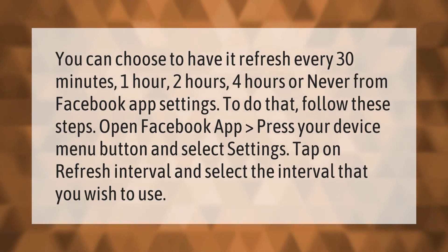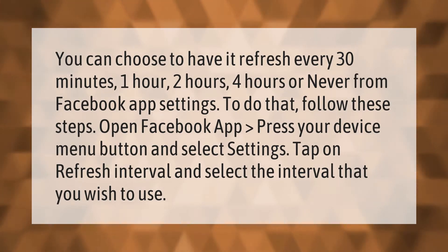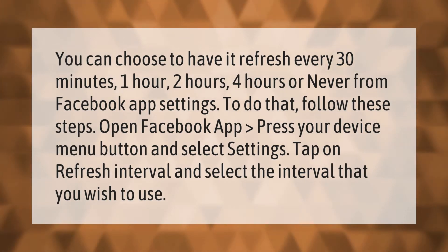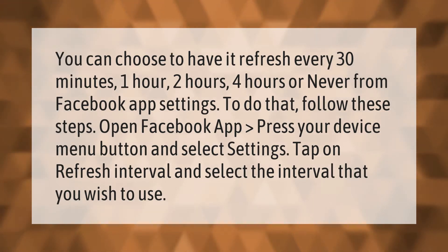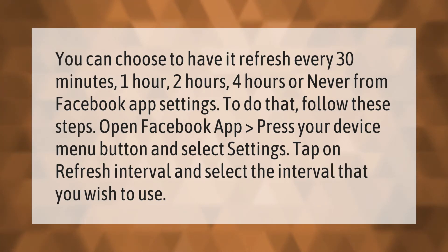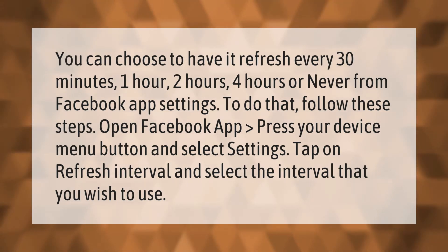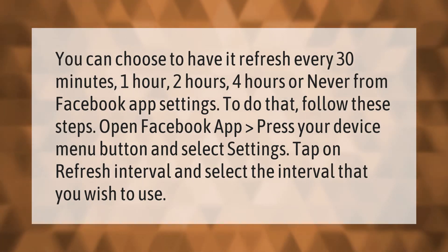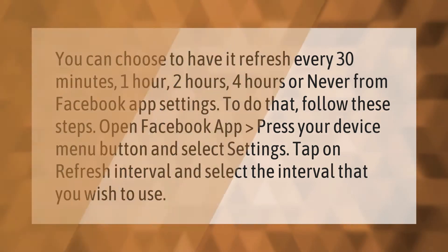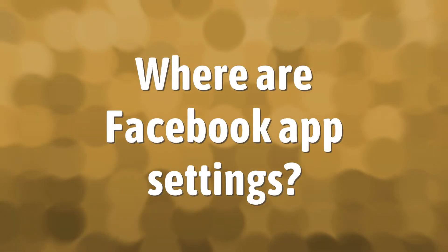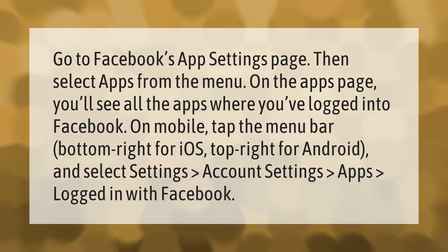You can choose to have Facebook refresh every 30 minutes, one hour, two hours, four hours, or never. To do that, follow these steps: open the Facebook app, press your device menu button and select Settings, tap on Refresh Interval, and select the interval that you wish to use.